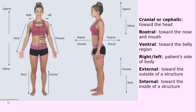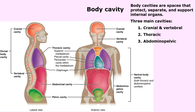I'm starting with these pictures just so you realize we're talking about human beings. We're talking about cavities. These may look like diagrams but they represent what's inside of us. There are different cavities and these cavities are just spaces that protect, separate, and support our internal organs. We often just think the inside is a big mess but really it's highly organized.